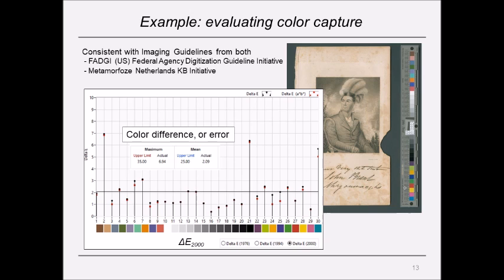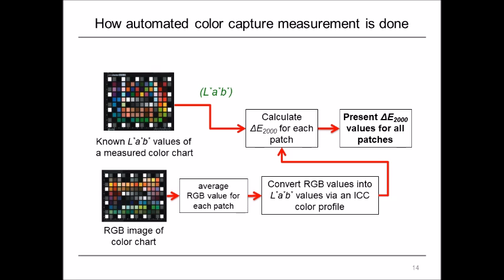Here's an example of an evaluation of color accuracy for capture using a test target alongside the object. The color difference from the ideal is presented as a delta E value derived from CIELAB, and this is consistent with imaging guidelines from both the FADGI initiative in the US and Metamorphosis in the Netherlands. This is how it's done: we compare known CIELAB values with those derived from the image of the test target and calculate a color difference.